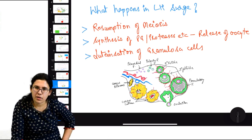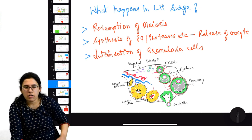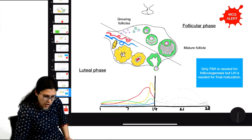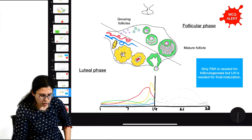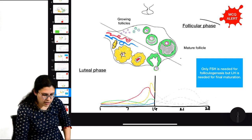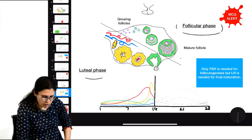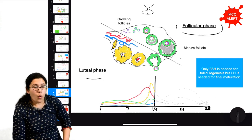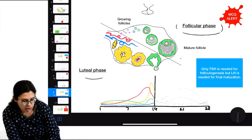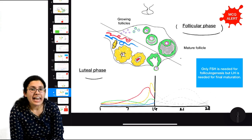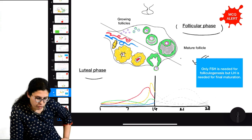Three important things happen in LH surge: first, resumption of meiosis; second, cutting of the ovary wall to release the egg; and third, luteinization of granulosa cells. This marks the end of the follicular phase. An important MCQ: only FSH is needed for folliculogenesis, but LH is needed for the final maturation of the follicle.